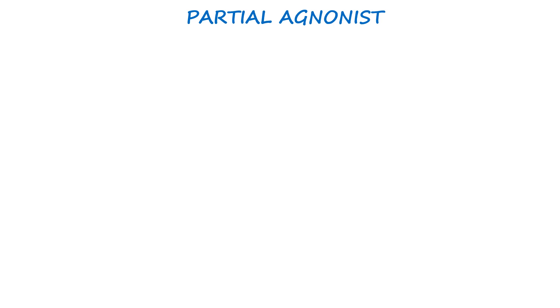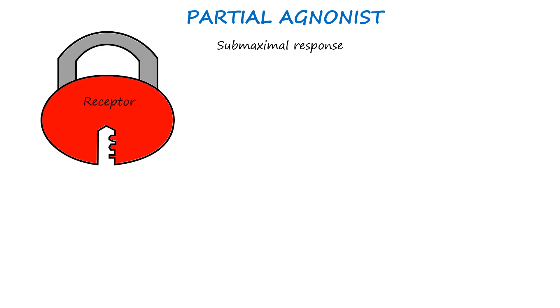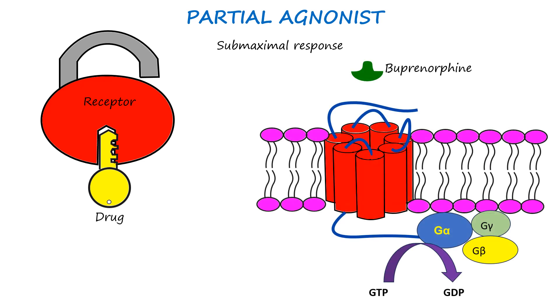Unlike full agonists, partial agonists produce a less-than-maximal response even if they occupy all available receptors — like a key that only partially turns a lock. A classic example in anesthesia is buprenorphine. It binds to the same mu opioid receptors as morphine but does not activate them to the same extent. Buprenorphine provides pain relief, but there is a ceiling to its effect: beyond a certain dose, increasing the dose does not increase the effect. This property can reduce side effects such as respiratory depression, making partial agonists useful in certain clinical situations.